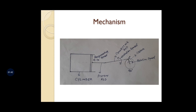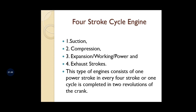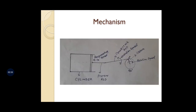This fundamental mechanism is important to understand the four-stroke cycle engine. In a four-stroke cycle engine we have four strokes: suction stroke, compression stroke, expansion stroke (also called working stroke or power stroke), and exhaust stroke. The crank has to make two revolutions — 720 degrees — to complete one cycle.